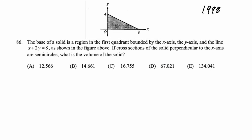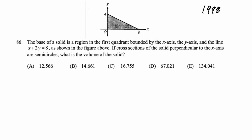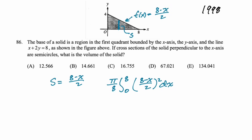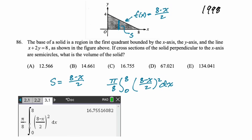From 1998: the base is the region bounded by the x-axis, y-axis, and the line x plus two y equals eight, with semicircular cross sections perpendicular to the x-axis. Solving for y gives eight minus x all over two, so s equals f of x minus zero. Since it's semicircles, it's pi over eight times s squared, integrating from zero to eight. Calculator gives 16.755 — that's option c.